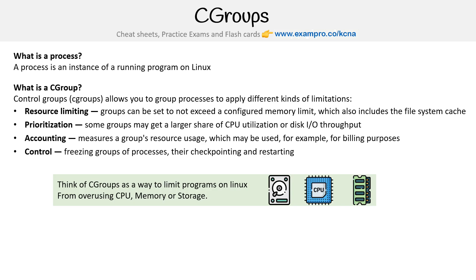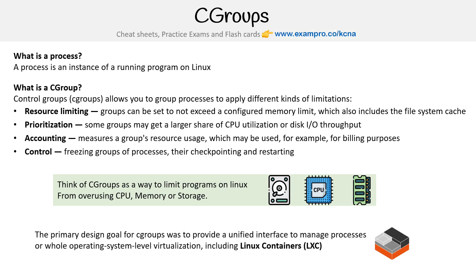Think of cgroups as a way to limit programs on Linux from overusing CPU, memory, or storage. The reason we're learning about cgroups is because of Linux containers. The primary design goal of cgroups was to provide a unified interface to manage processes or whole operating system level virtualizations, including Linux containers.